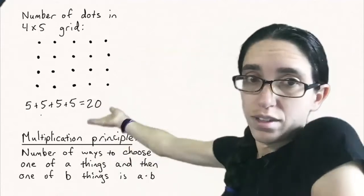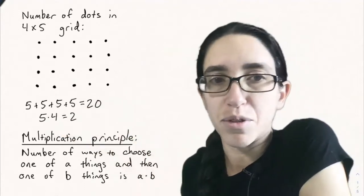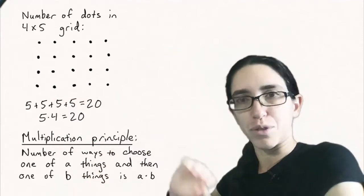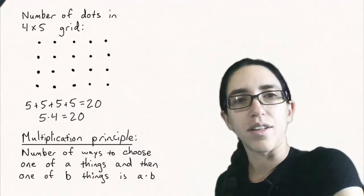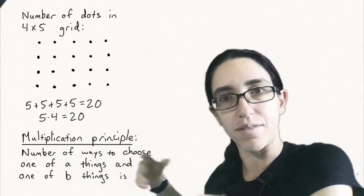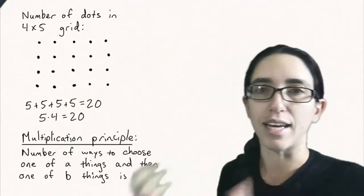Now if you're familiar with addition and multiplication we recognize this as five times four, which is also 20. That's another way of doing it. But this leads us to the multiplication principle in combinatorics. And the multiplication principle says that the number of ways to choose one thing out of A possibilities and then also one thing out of B possibilities is A times B.